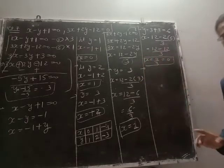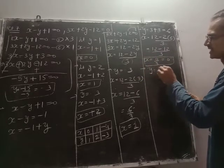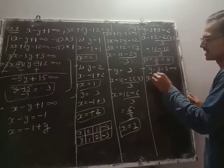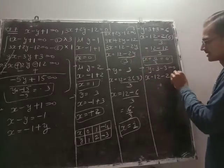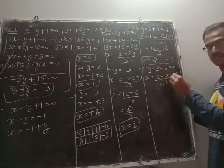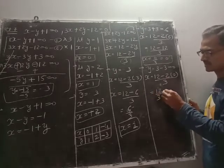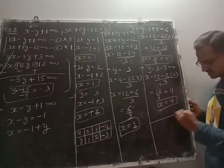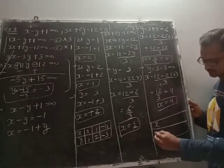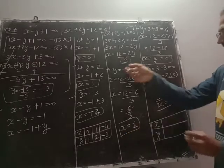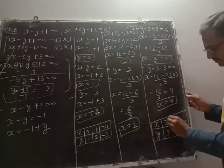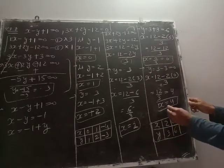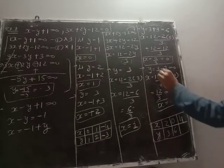If we take y as 0, x equals 12 minus 0 divided by 3, which is 12 divided by 3 equals 4. So x equals 4. Let us make a table: x is 2, y is 3. x is 0, y is 6. x is 4, y is 0.